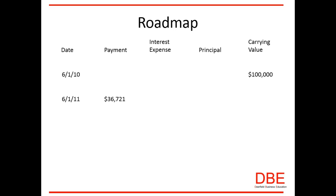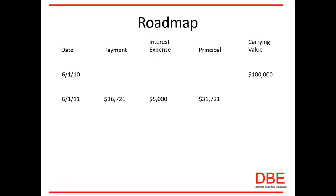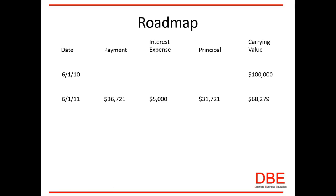To get interest expense, you use the formula principal times rate times time. So one hundred thousand times five percent times one year gives us interest expense of five thousand dollars on the first payment. When you take the five thousand dollars in interest expense off of the thirty-six thousand seven hundred and twenty-one dollar payment, the remainder goes towards principal — that's thirty-one thousand seven hundred and twenty-one dollars. Your new carrying value is sixty-eight thousand two hundred and seventy-nine dollars.